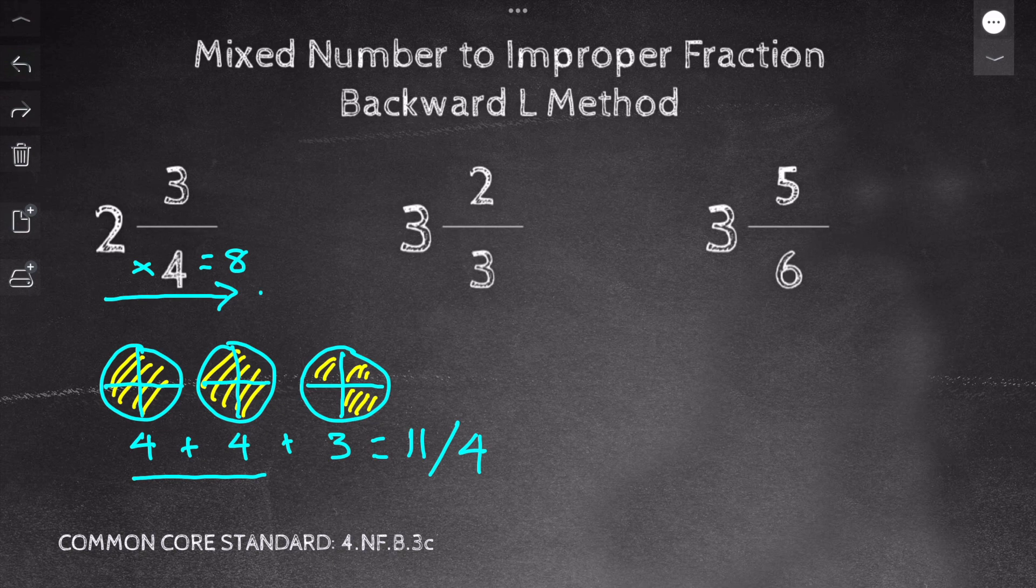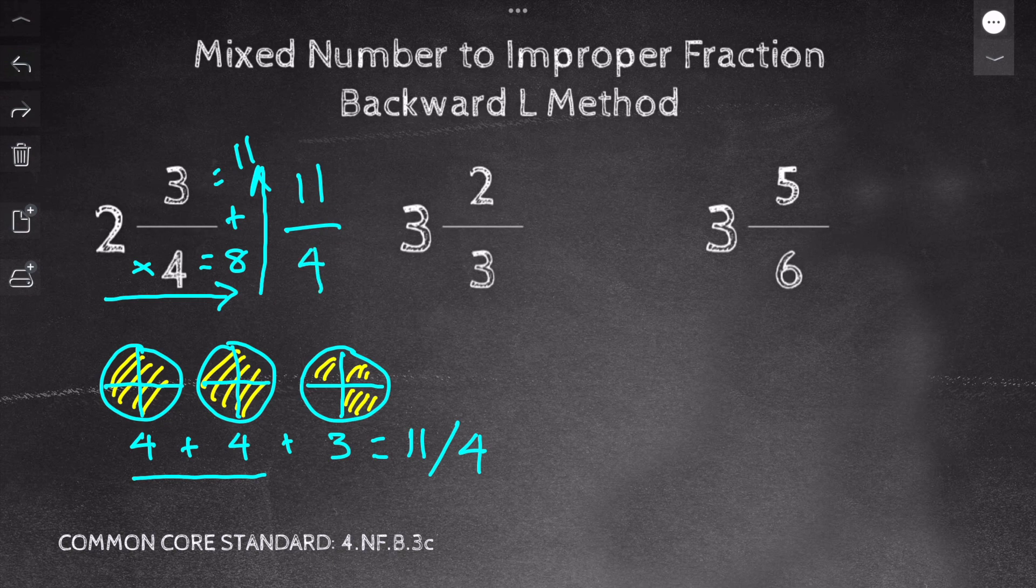And then I'm going to move straight up and add my 3. So 8 plus 3 equals 11. And then I just keep my denominator, which is 4. So my answer is 11/4.